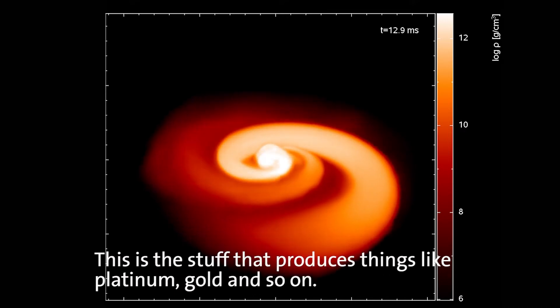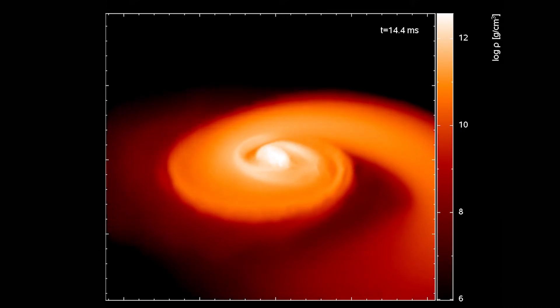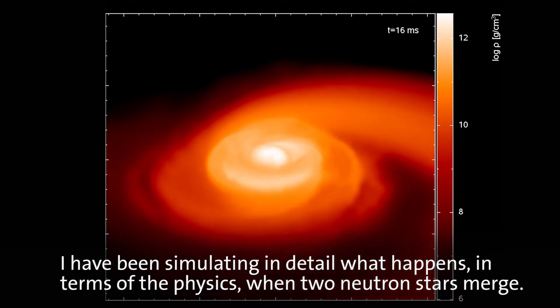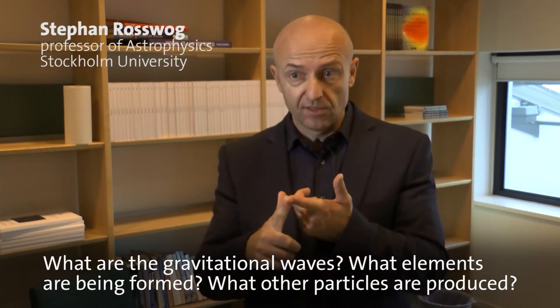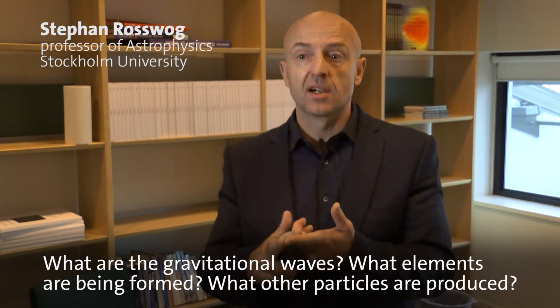So this is the stuff that produces these things like platinum and gold and so on. I have been simulating in a lot of detail what happens in terms of the physics when these neutron stars merge. So what are the gravitational waves, what elements are formed, what type of other particles are produced.